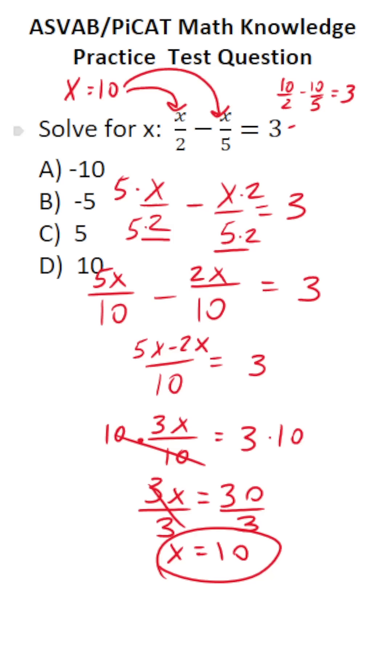10 divided by 2 is 5. 10 divided by 5 is 2. 5 minus 2 is 3. Does 3 equal 3? It does. That is a true statement, so I'm confident that D is the correct answer.